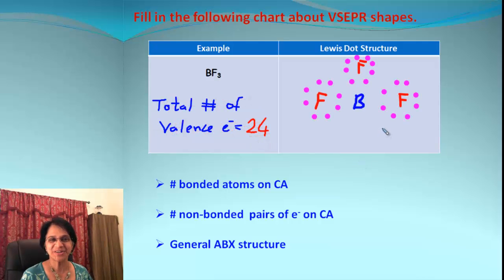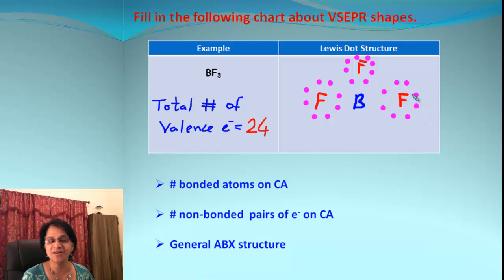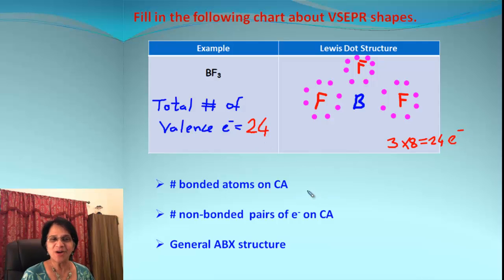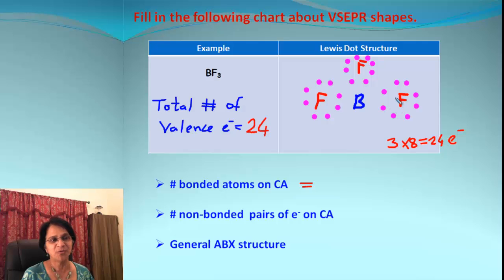When we put this into the Lewis dot structure, boron is the central atom with all three fluorine atoms surrounding it. Counting electrons: each fluorine has eight electrons, three atoms gives three times eight equals 24 electrons — matching what we had.